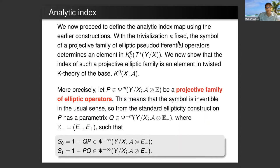The next order of business is to define the analytic index. Fixing the trivialization κ, the symbol of a projective family of pseudodifferential operators determines an element in the compact support K-theory of the fiberwise cotangent bundle. We now show that the index of such a family is an element in the twisted K-theory of the base. Here twisted K-theory is denoted by the algebra, which is more precise than just looking at the invariant of the algebra.